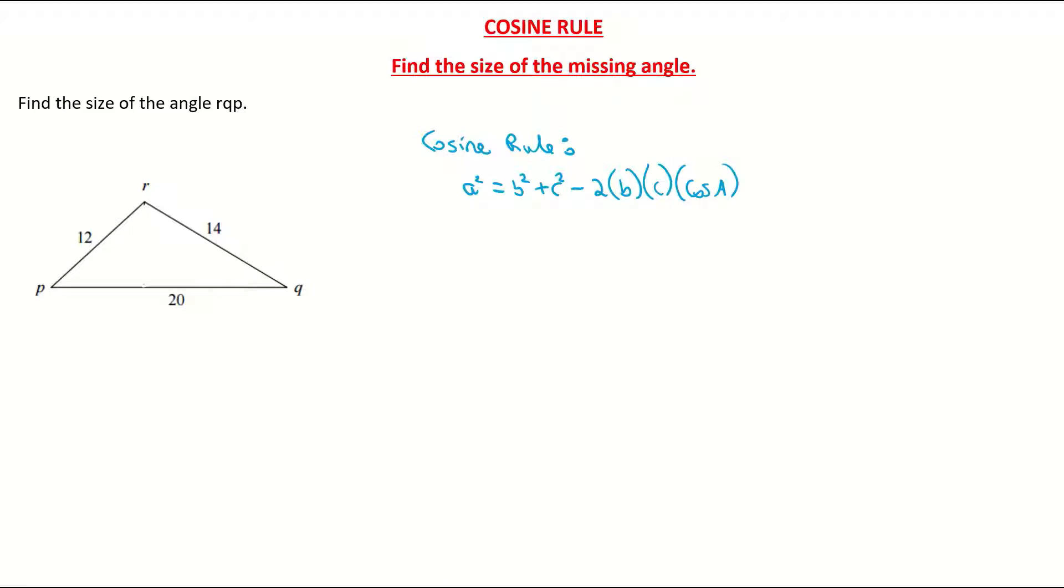I'm using brackets there to denote multiplication. It's very important when you're filling in your formula that you start with the angle A and the corresponding side a. They're the most important two to get correct. Now coming over to this question, they're asking me to find the size of the angle QP, so they're basically getting me to find the size of angle Q. I'm going to call angle Q my angle A.